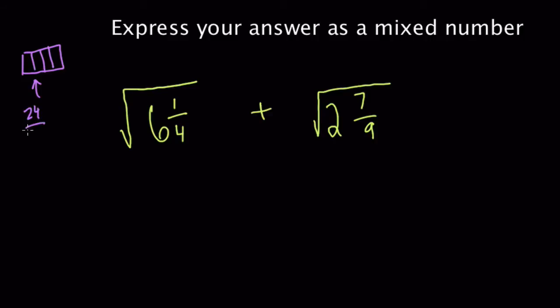Well, it's 24-fourths, because each of the six wholes has four-fourths. Six times four is 24. So we can think of this as 24 and a fourth. 24-fourths and a fourth. So 25-fourths. And now we have the square root of this fraction.